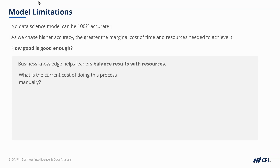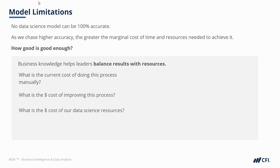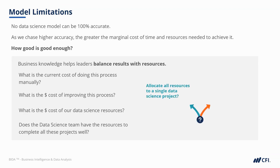Business knowledge helps teams and leaders balance results with resources. What is the cost of doing this process manually without any automated system? What is the dollar cost of improving this process? How much does our data science team cost the business per month? And does the data science team even have the resources to complete all these projects effectively? Understanding these answers will help us better allocate resources. Instead of chasing unattainable perfection on a single project, perhaps those resources could be better assigned to three projects that each improve a business process by 15%.